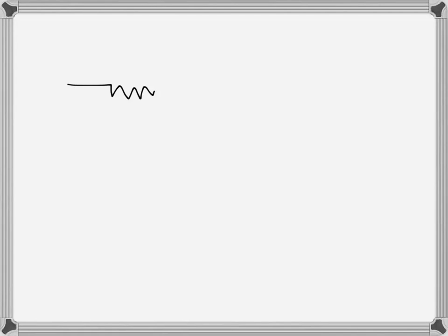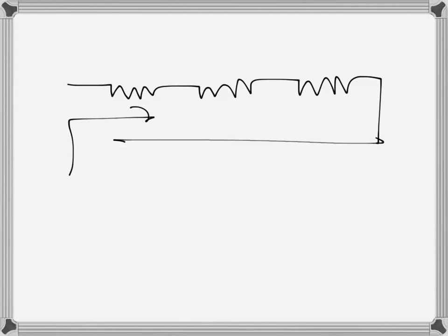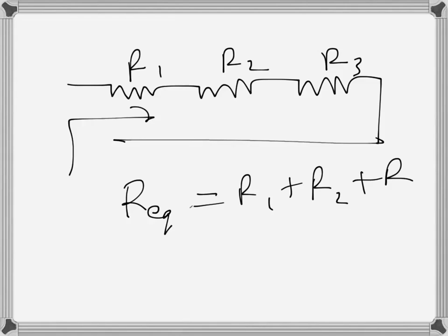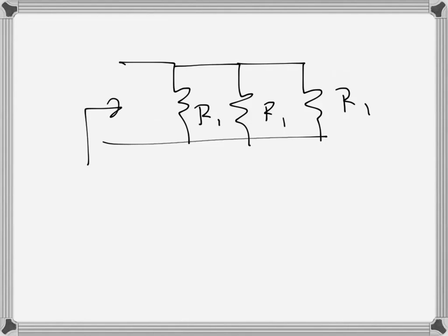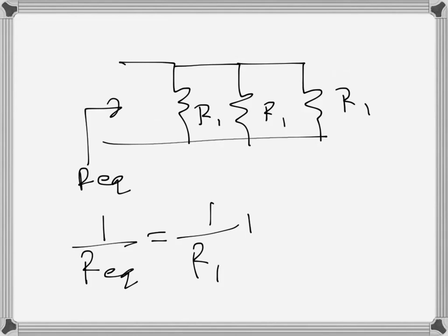The series equivalent of resistances: the equivalent resistance for series will be R1 plus R2 plus R3 when the resistances are connected in series. If they are connected in parallel, the equivalent is the inverse of the sum of inverses — so 1 over R_equivalent equals 1 over R1 plus 1 over R2 plus 1 over R3, and it goes on up to 1 over Rn if there are many more.